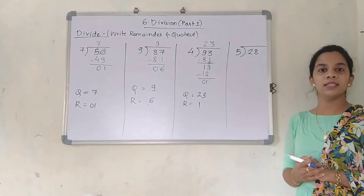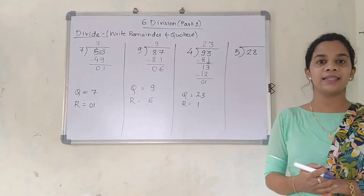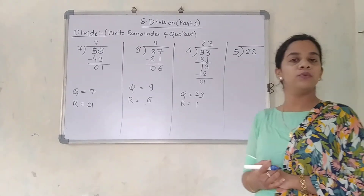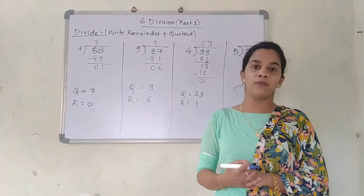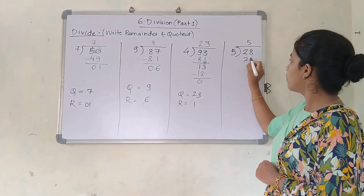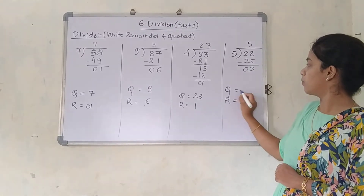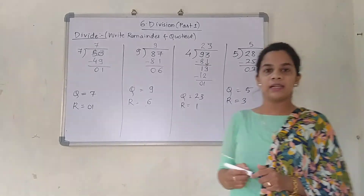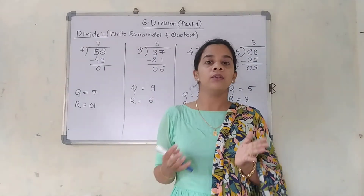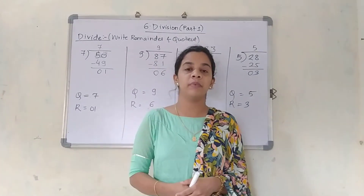The last question is 28 divided by 5. 28 is less than 5 tens are 50, so we can directly say our table: 5 ones are 5, 5 twos are 10, 5 threes are 15, 5 fours are 20, 5 fives are 25. So 5 fives are 25 is nearest to 28. The quotient is 5 and the remainder is 3. I hope this lesson is totally covered. Try to see these examples again and again so that you will understand this lesson better. Thank you.